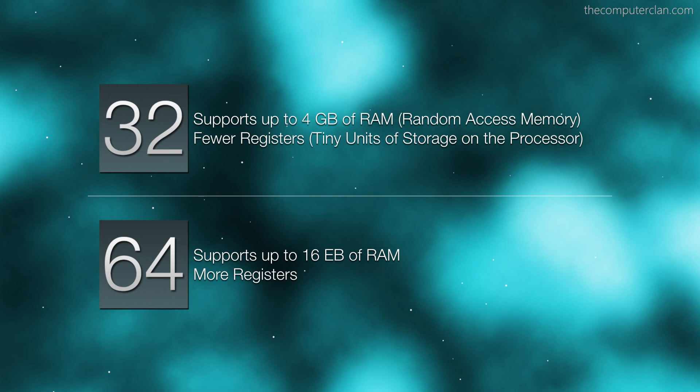A 64-bit system, on the other hand, can support up to 16 exabytes of RAM. That is 16 billion gigabytes. That's a theoretical limit — I'm pretty sure we have not hit that amount of RAM even on supercomputers — but it's virtually unlimited in practice. 64-bit can also support more registers than a 32-bit system. Registers are tiny units of storage on the processor, and those help with performance. The actual number of registers varies depending on what architecture you are talking about — it's different between different companies, like Intel's may be a little bit different compared to Qualcomm's.